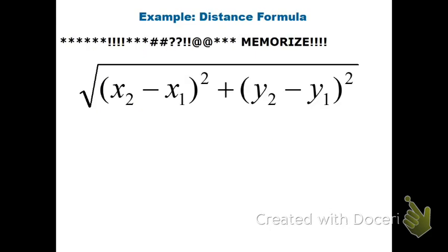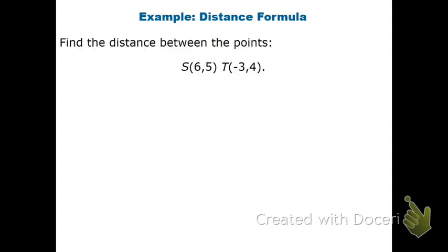You can memorize the distance formula, or we can use the Pythagorean theorem — that's kind of one less thing to have to memorize. When I want to find the distance, d squared is equal to the change in my x squared plus the change in my y squared.